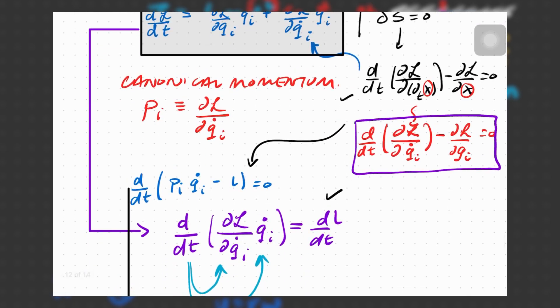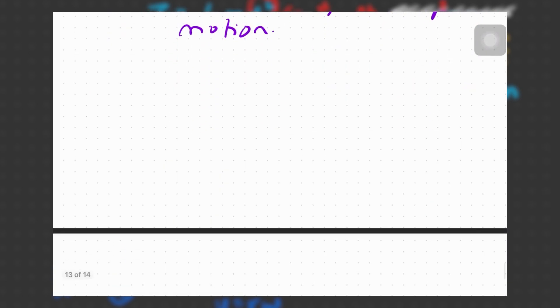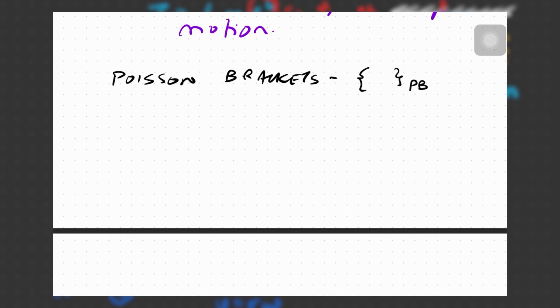Now the real thing we've been waiting for: dealing with the commutation relation between two quantities in generalized coordinates and how to arrive at the uncertainty principle. Let me define what we call the Poisson brackets, denoted by curly braces with subscript PB. The Poisson bracket between some quantity A and B is defined as: (del A over del q_i)(del B over del p_i) minus (del A over del p_i)(del B over del q_i).